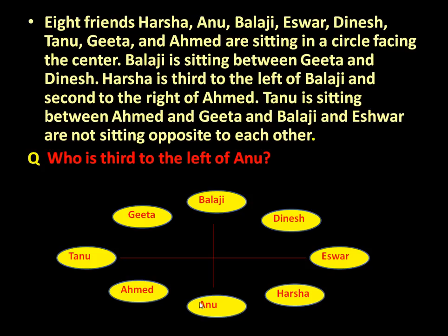Now the given question is: who is third to the left of Annu? This is the right side of Annu and this is the left side of Annu. Counting third to the left of Annu — one, two, three — it is Geeta. So the answer is Geeta.